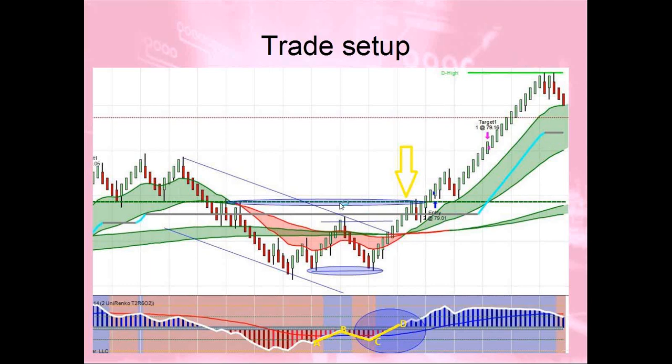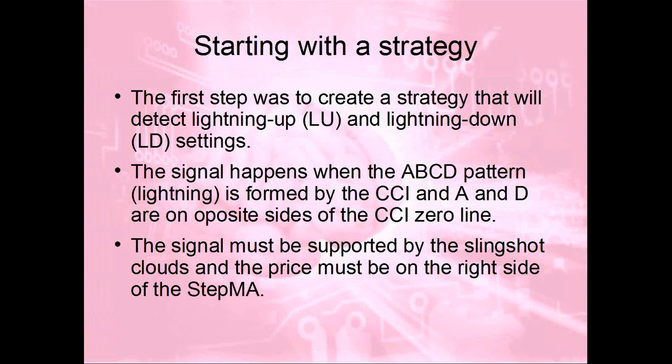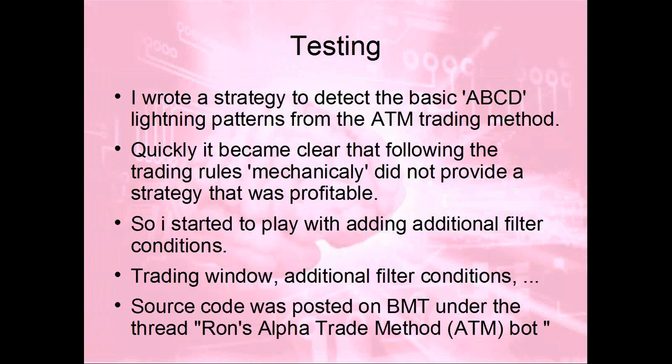This was a trading strategy some people came up with, many people played with it, and I played with it myself. I thought it was a great strategy, so I programmed it — I created a NinjaTrader strategy to detect those patterns and create trading signals. Unfortunately, the strategy detected A, B, C, D, but very quickly I came to the conclusion that when I followed it mechanically — just buy, sell, buy, sell — sometimes it worked and sometimes it didn't. So I needed to add something to filter and improve it.